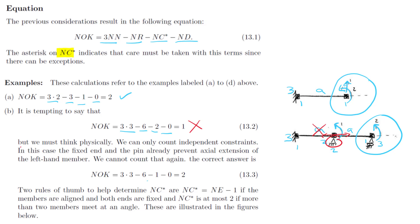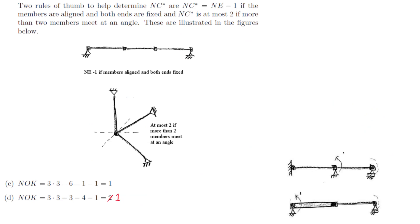If we change the number of constraints to 1, we get the correct value. I'll give you two quick rules of thumb to help you determine this value of NC star. Now we always have to think about it, but these might help give you some guidance.